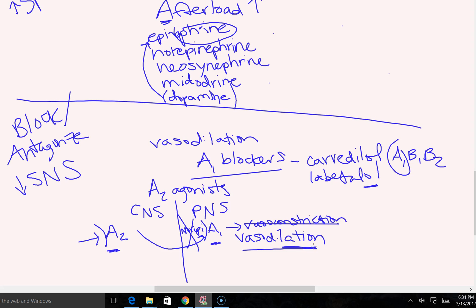Examples of alpha-2 agonists are clonidine and Precedex. Since alpha-2 agonists work centrally in the central nervous system, you're going to have CNS effects — specifically CNS depression like sedation. Clonidine and Precedex can both cause sedation, and that sedative quality is actually one reason Precedex is used clinically.